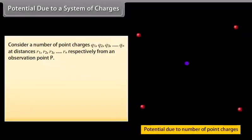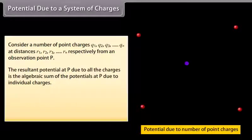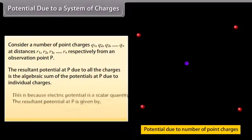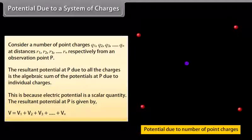Potential due to a system of charges. Consider point charges Q₁, Q₂, Q₃, … Qₙ at distances R₁, R₂, R₃, … Rₙ respectively from a point of observation P. The resultant potential at P due to all charges is the algebraic sum of the potentials due to individual charges, since electric potential is a scalar quantity. The resultant potential is V = V₁ + V₂ + V₃ + … + Vₙ.